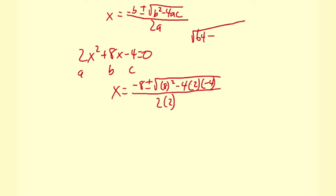4 times 2 is 8. Actually, let's just keep it negative 8 because of the minus 4. And then times negative 4, that is 32. So it's going to be 64 plus 32. And 64 plus 32 is 96.